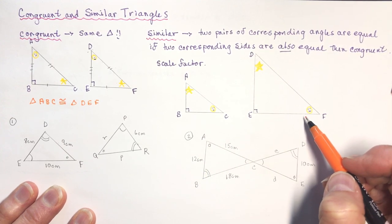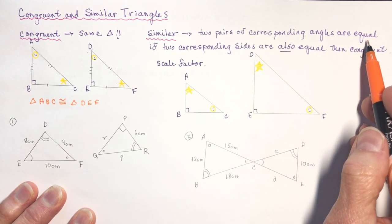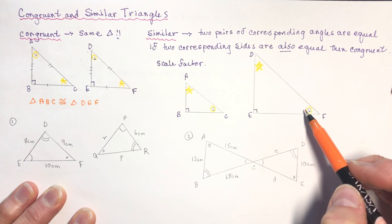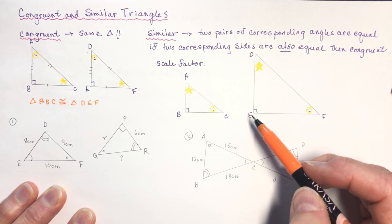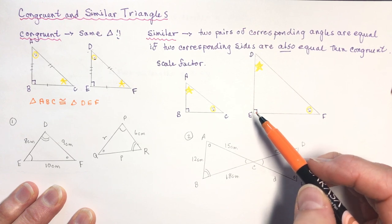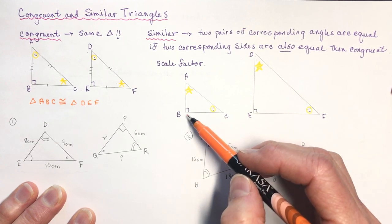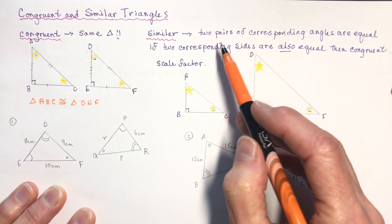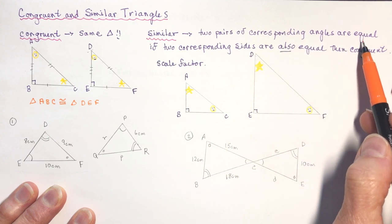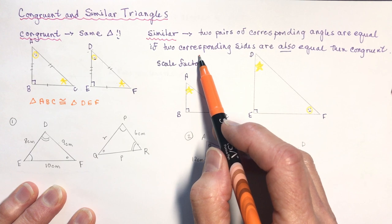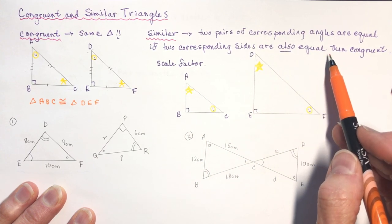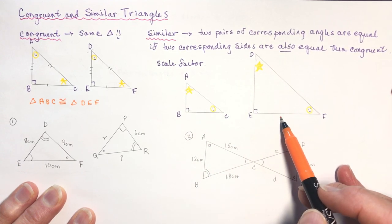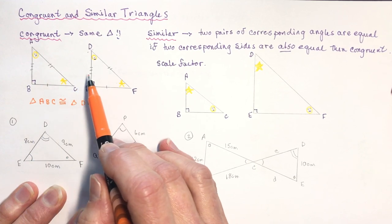If two triangles are similar, we need two pairs of corresponding angles that are equal. If you have two angles that are equal, the third one has to be equal as well, because they have to add up to 180. So if this was 60 and this was 30, this has to be 90. If two corresponding angles are equal AND two corresponding sides are also equal, then they're congruent.